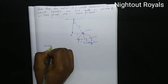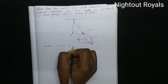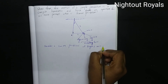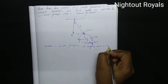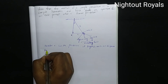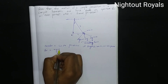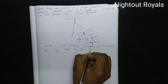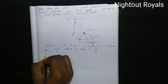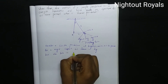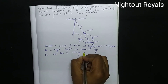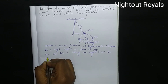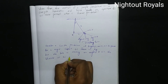Consider a simple pendulum of length L and mass m suspended from a rigid support, as shown in the figure. Let the bob make an angle theta with the vertical at an instant.